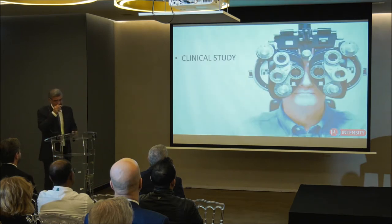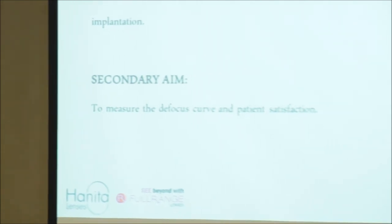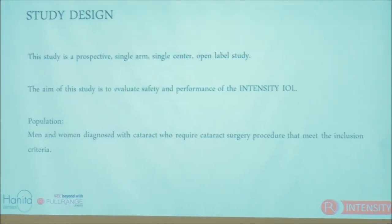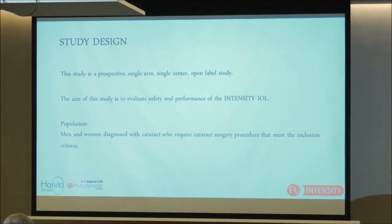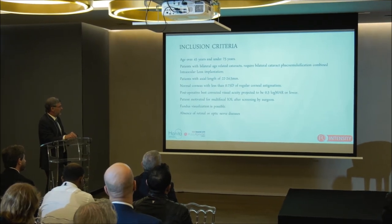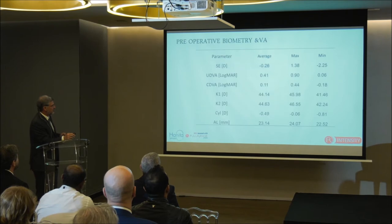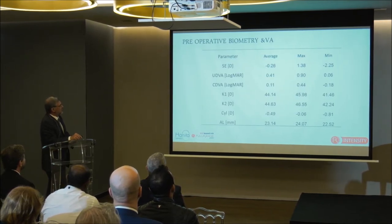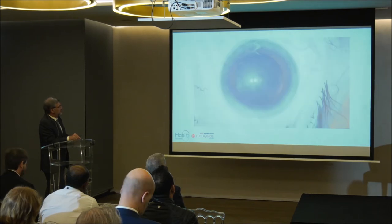We conducted a very initial clinical study — so far about five patients and nine eyes implanted. The aim was to investigate binocular and monocular visual acuity at all distances and to measure defocus curves. This is a prospective, single-arm, single-center, single-surgeon, open-label study. Inclusion criteria: patients aged 45–75, normal axial length, astigmatism ≤0.75 diopters, and no other ocular disease. This is a small number, but it shows the initial notion.